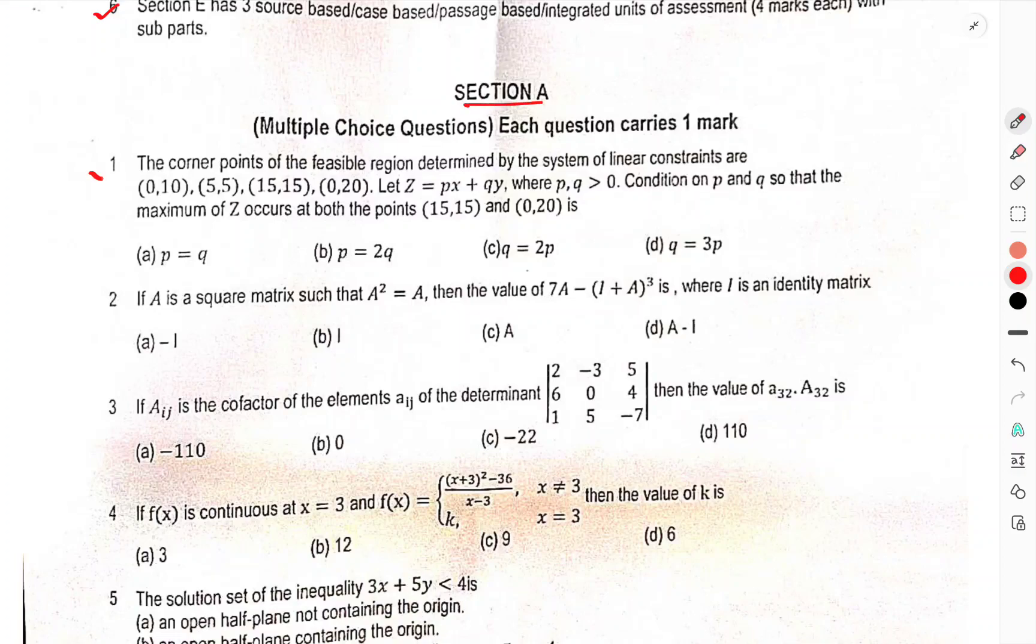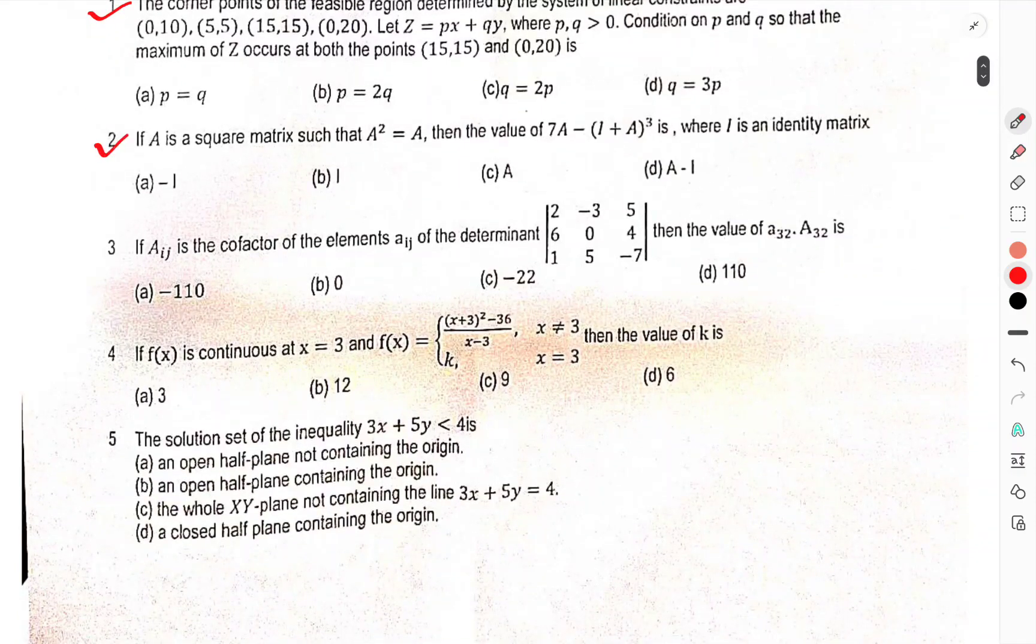First of all, section A, each coordinate point of the feasible reason determined by the system of linear constraints are this. Z is equal to PX plus QY, where PQ is greater than zero, condition and P is equal so that the maximum Z occurs both points 15, 15, and 0, 20. Question number two, if A is a square matrix A square is equal to A, then the value of 7A plus AI, where I is the identity matrix.